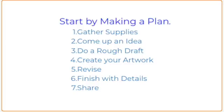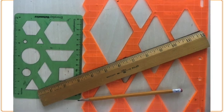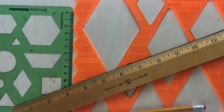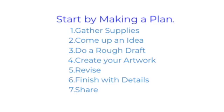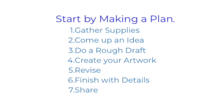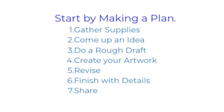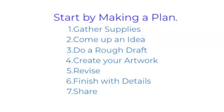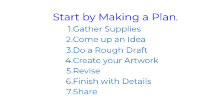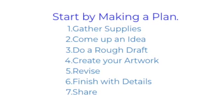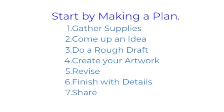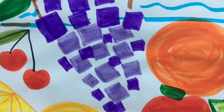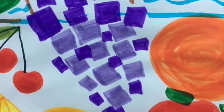All artists before they begin make a plan. So the first thing you'll need to do is gather your supplies. Once you've gathered your supplies, you have to start with an idea and make a plan. The idea can be in your head or you can draw it out on a practice paper or rough draft. Once you do that, then you begin to create. You try out your idea, you revise, you make changes, and then you finish by adding details.